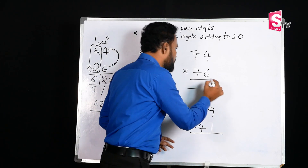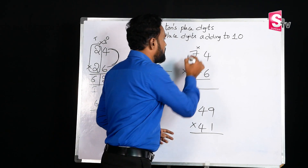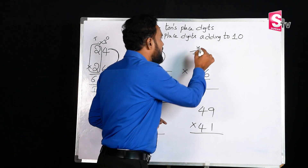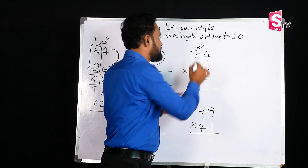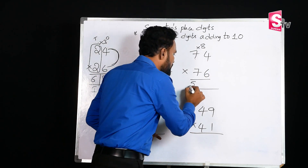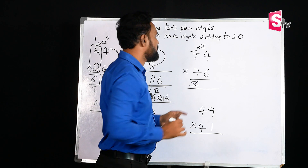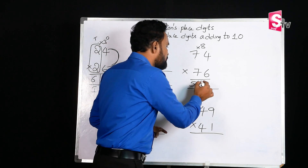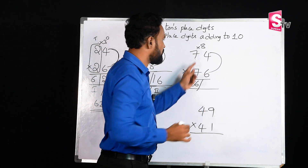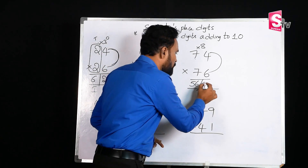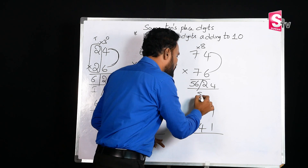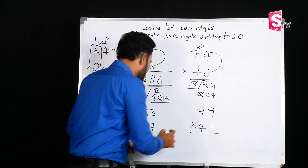This next problem: the tens-place digit is 7, and 7 times 8 is 56. Next, the unit-place digits multiplication: 4 times 6 is 24. So our final answer will be 5624.